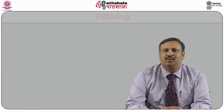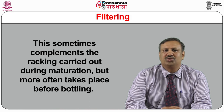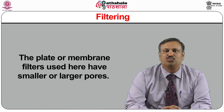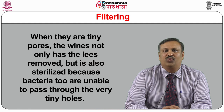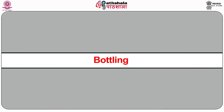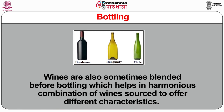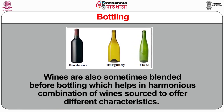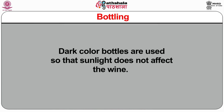Filtering: this sometimes complements the racking carried out during maturation, but more often takes place before bottling. The plates or membrane filters have smaller or larger pores — when they have tiny pores, the wine not only has the lees removed but is also sterilized because bacteria too are unable to pass through the very tiny holes. Bottling: wines are sometimes blended before bottling to achieve a harmonious combination of characteristics. Dark color bottles are used so that sunlight does not affect the wine. Wine producers also use bottles of various shapes and sizes to identify different types of wines. The three most common shapes of wine bottles are Bordeaux, Burgundy and flute.